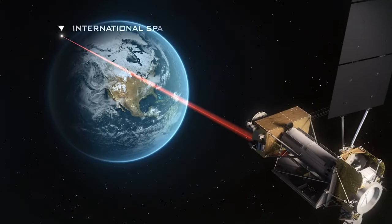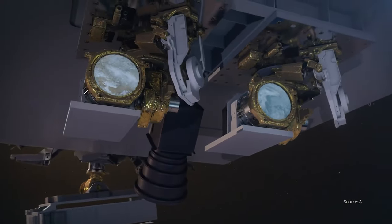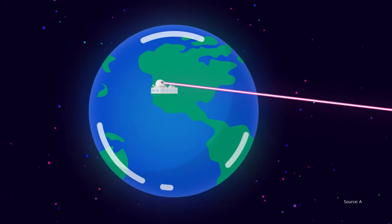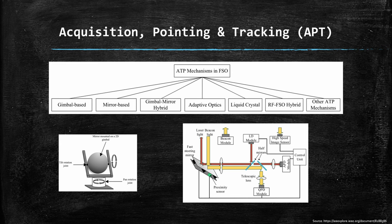Let's take a look at Acquisition, Pointing and Tracking — ATP. These mechanisms ensure a laser communication link is established and maintained between a spacecraft and a ground station. The ATP system compensates for the relative movement of the satellite and the Earth due to the planet's rotation and the satellite's orbit, and the dynamic behavior of the optical channel. Gimbal-based systems use a pivoting mount to direct the laser, offering wide-angle coverage. Mirror-based systems rely on reflective surfaces to steer the beam, providing precision and speed. Hybrid systems combine both for enhanced performance. For example, for a ground-to-geostationary orbit link, a pointing accuracy of about 5 micro-radians is needed in order to hit the satellite. Adaptive optics correct for atmospheric distortions in real time, and all these systems employ fast feedback loops to ensure uninterrupted data flow.